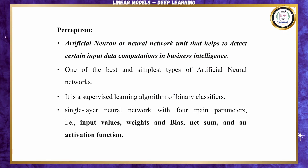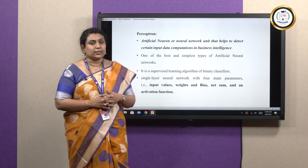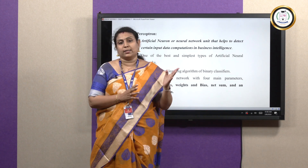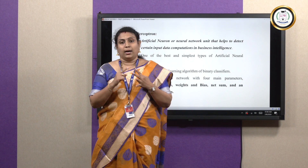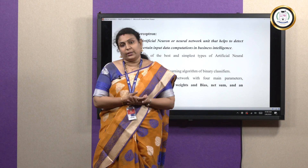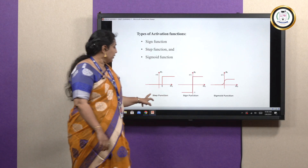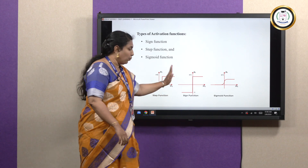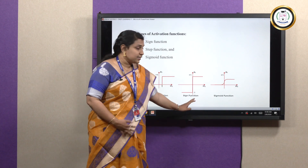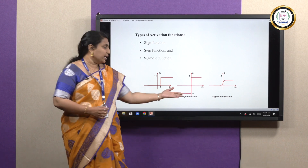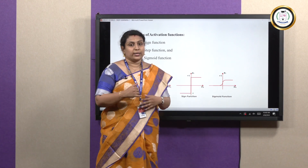Perceptron comes under artificial neural networks. It is a supervised learning algorithm and a binary classifier. The important parameters are: inputs, weights, summer (weight sum), activation function, and outputs. Here you can see the step function — on the positive side; the sine function varies from -1 to +1; and the sigmoid function gives values from 0 to 1.